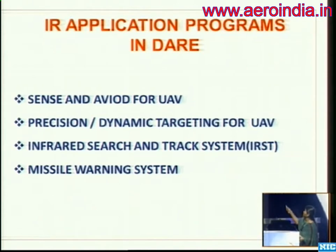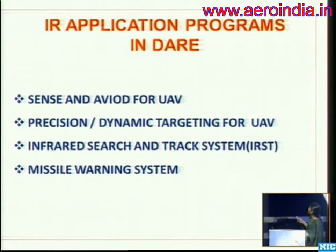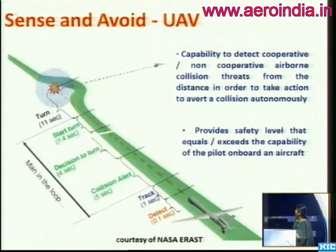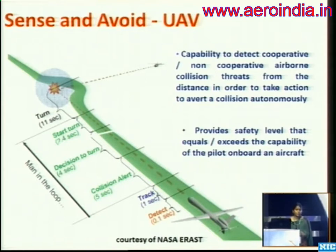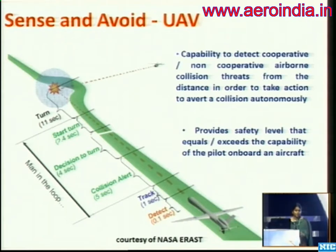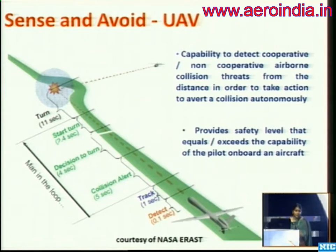The major programs we are dealing with are: the sense and avoid system for UAV, precision and dynamic targeting for UAV, infrared search and track system, and missile warning system. The sense and avoid program is for a UAV in the combat class of aircraft. Initially the sense and avoid capability came for manned aircraft to prevent mid-air collisions. A similar feature was needed for an unmanned aircraft flying in national airspace, sharing space with other aircraft, requiring an equivalent or better level of safety.